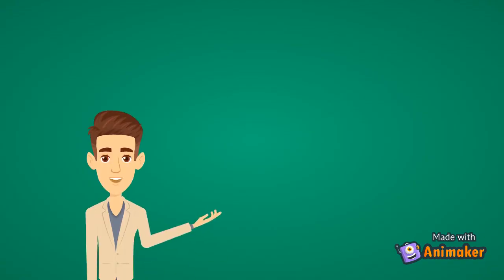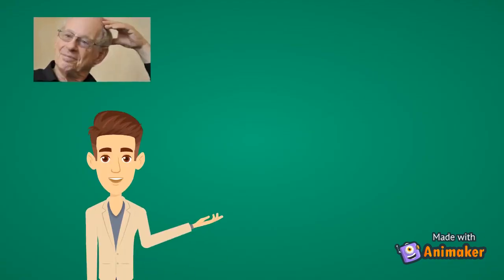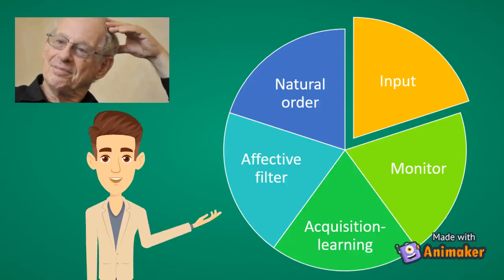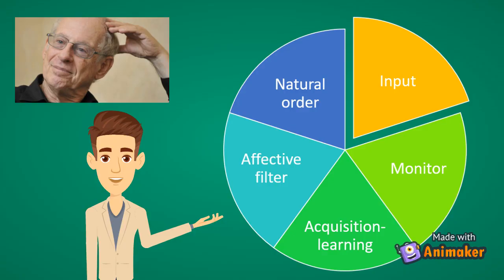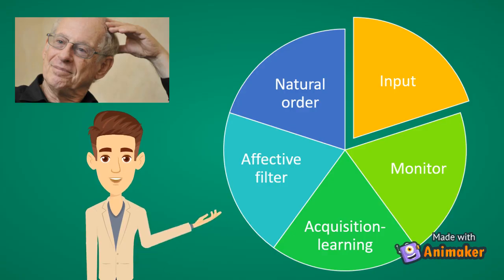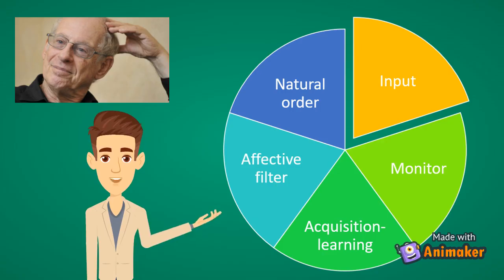This theory consists of five main hypotheses. Number one, the acquisition learning hypothesis. Number two, the monitor hypothesis. Number three, the input hypothesis. Number four, the affective filter hypothesis. And number five, the natural order hypothesis.